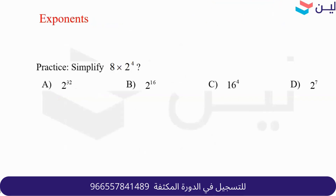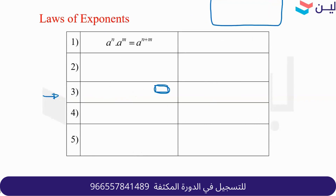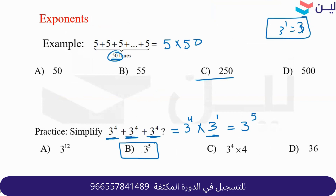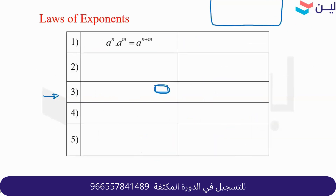Let's move to practice. For 8 times 2 to the fourth — a student asks about the previous question: three to the power of four plus three to the power of four became five because we did four plus one equals five. Why wasn't it three to the power of twelve? Because the base is three and the power is four; the other base is three and the power is one.